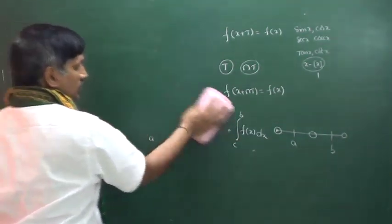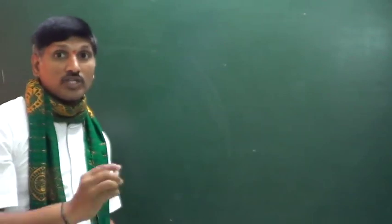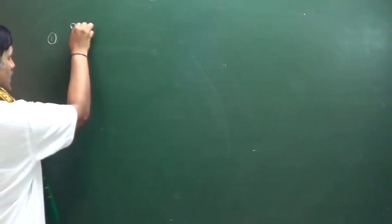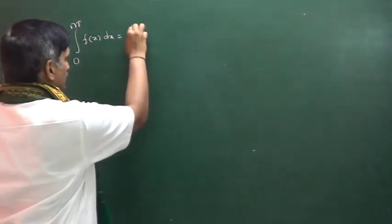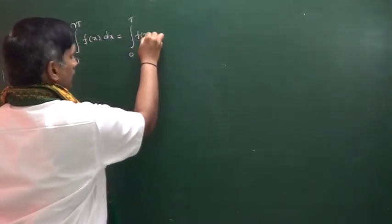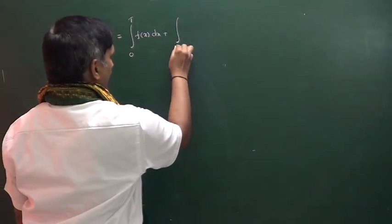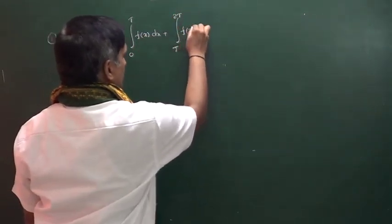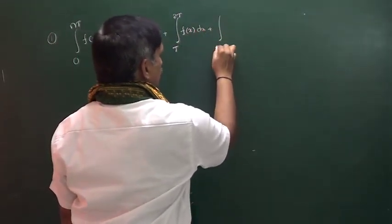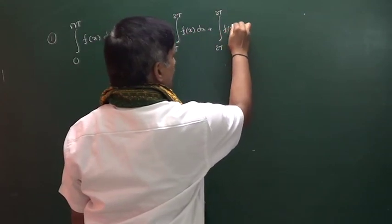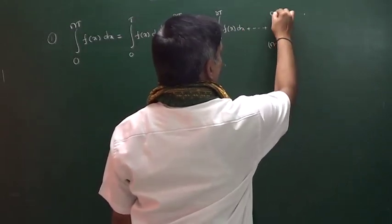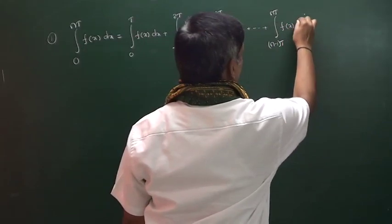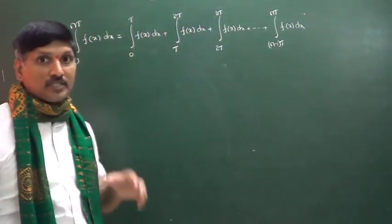Now let us discuss ideas related to periodicity using definite integrals. The first property: the integral from 0 to nt of f(x)dx. We can split this as: integral from 0 to t, plus t to 2t, plus 2t to 3t, and so on, up to (n−1)t to nt of f(x)dx.